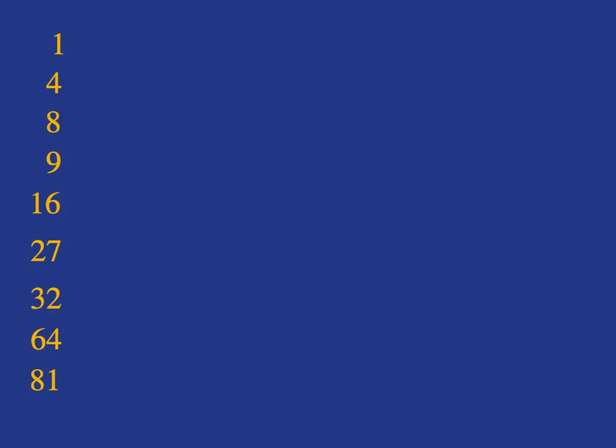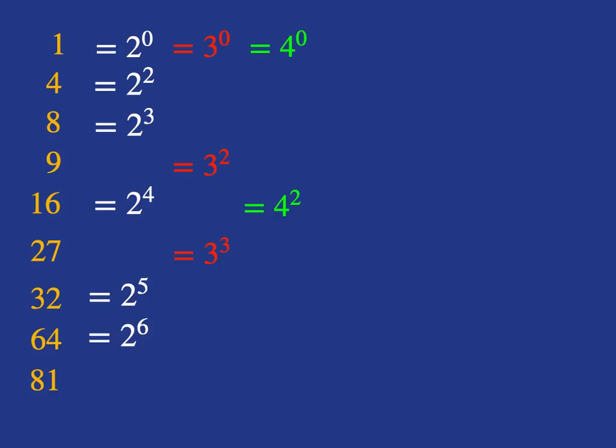So, for example, 1, you know that you can rewrite as 2 to the 0, you can rewrite it as 3 to the 0, 4 to the 0, 5 to the 0, 6 to the 0, etc. So really worth just becoming very familiar with these. It'll make your life a lot easier.